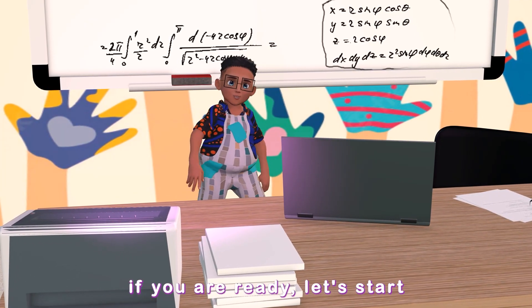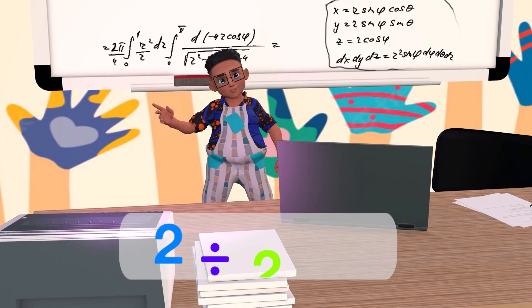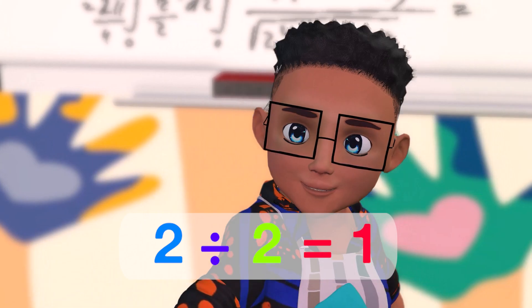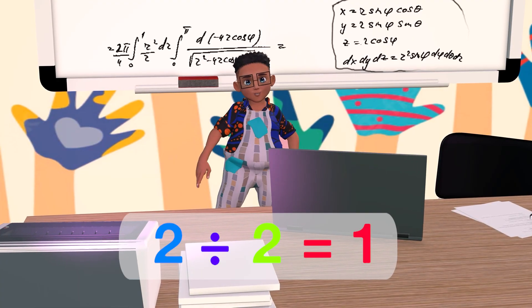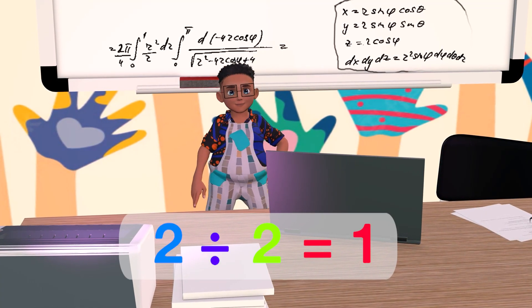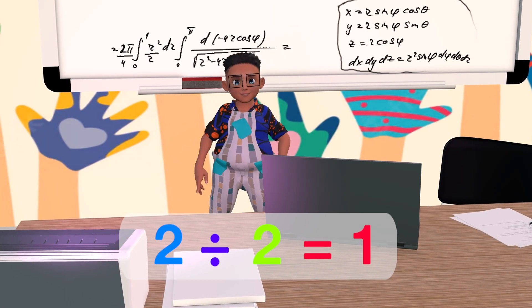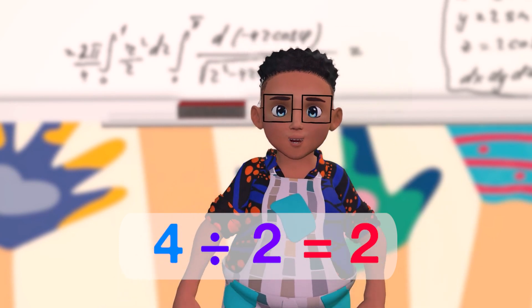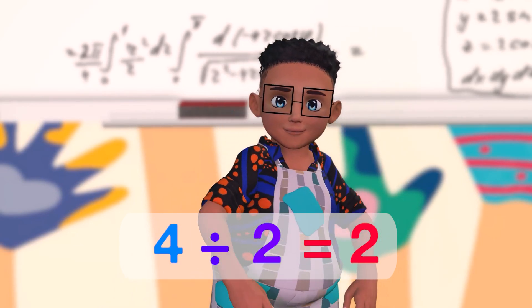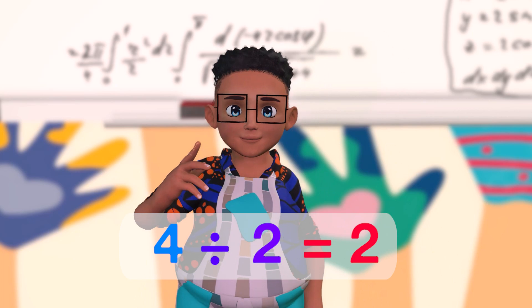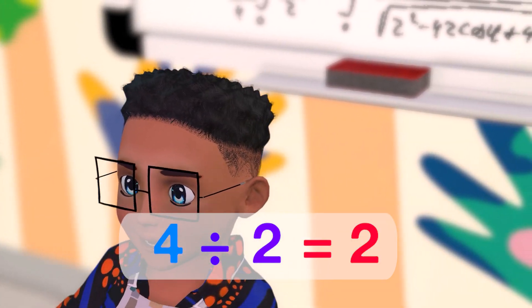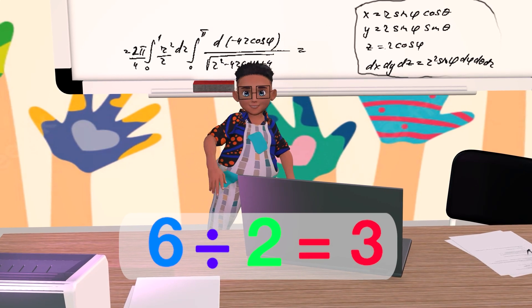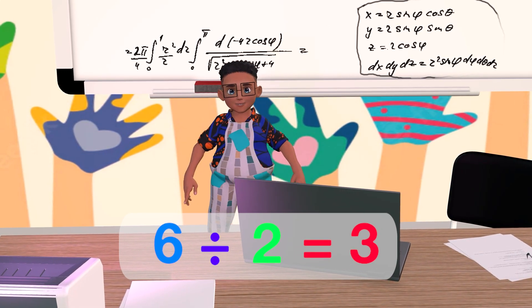If you're ready, let's start. 2 over 2 is 1. 2 divided by 2 is 1. 4 over 2 is 2. 4 divided by 2 is 2. 6 over 2 is 3.